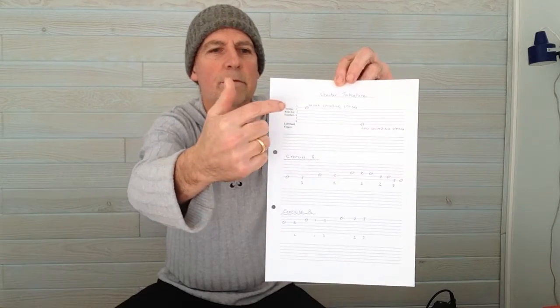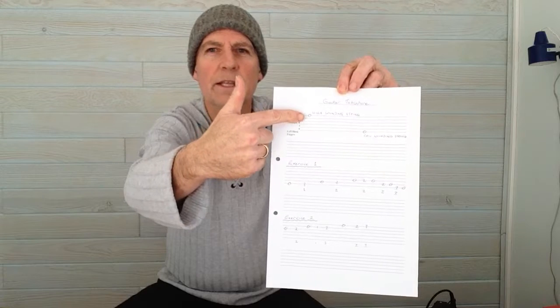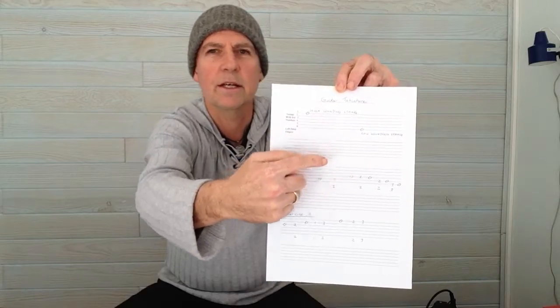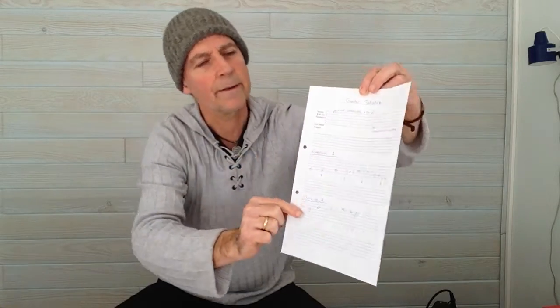Moving further along this top line, there's a zero on the top line and it says 'high sounding strings.' Further along, there's a zero on the bottom line and it says 'low sounding string.'